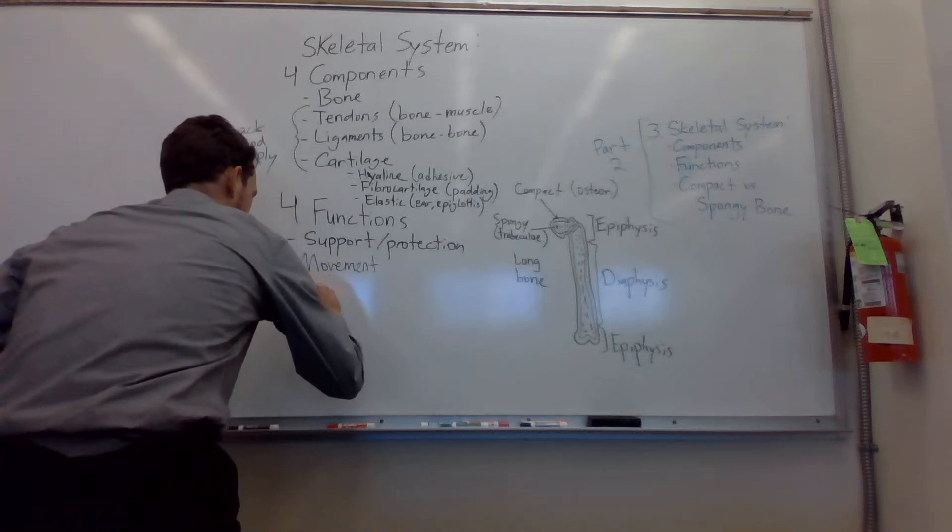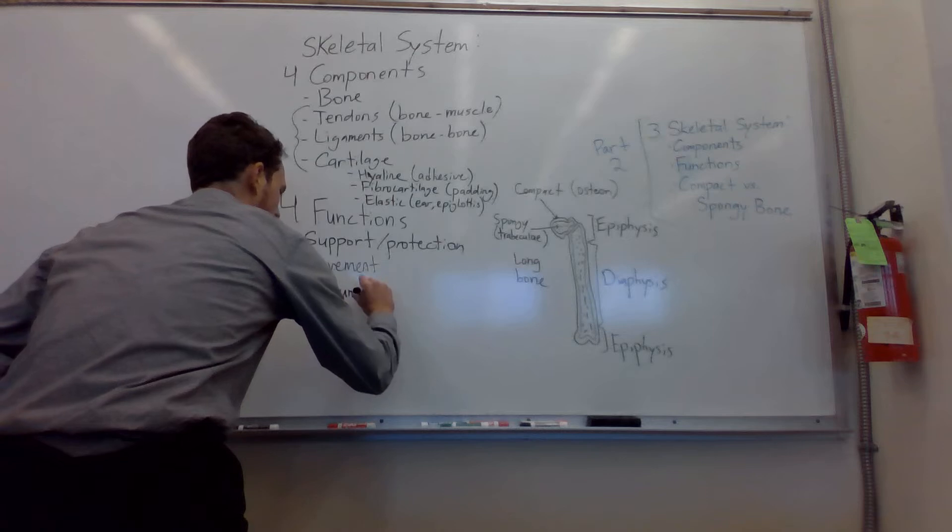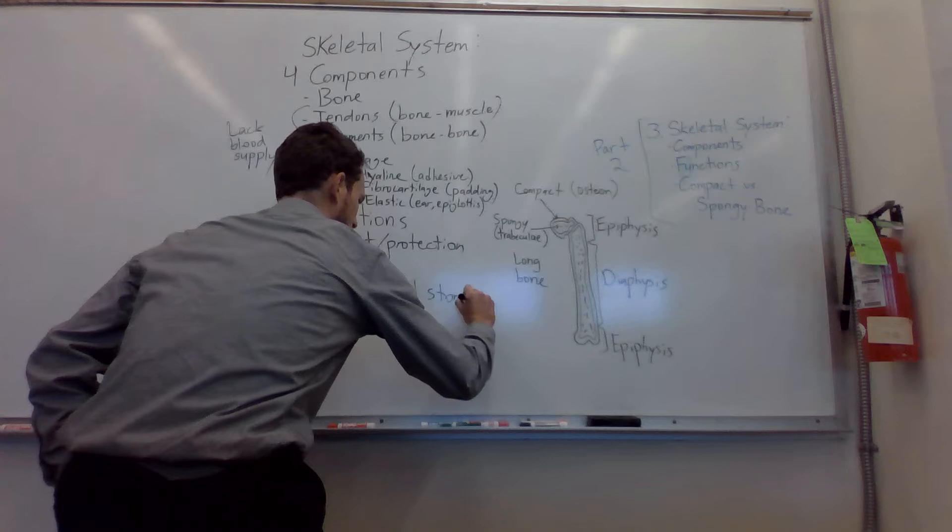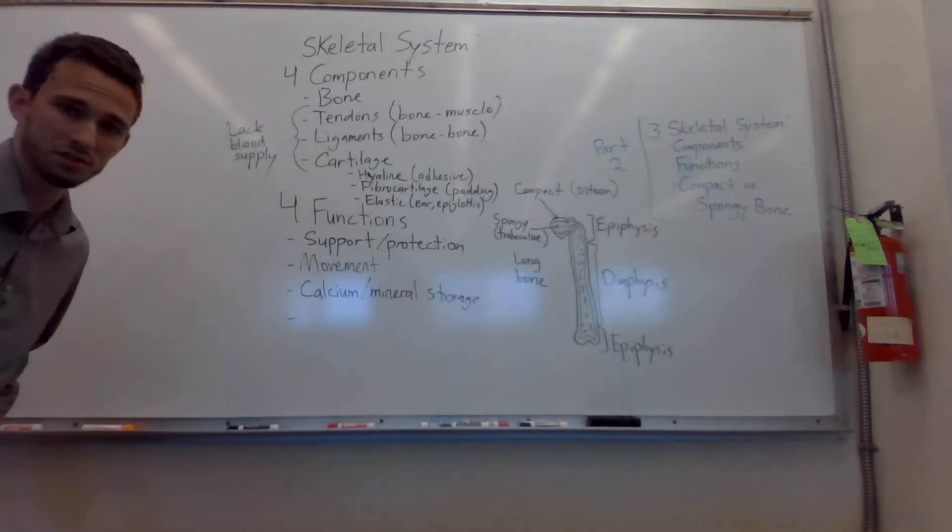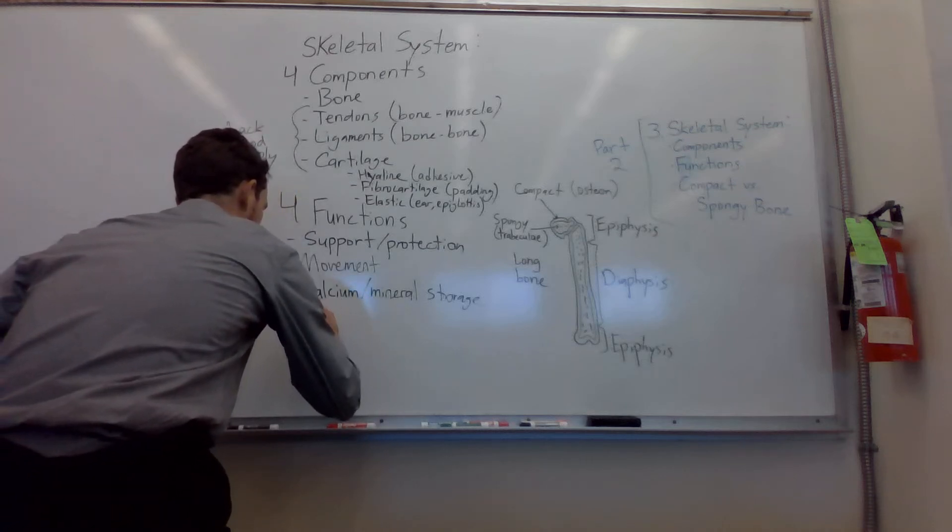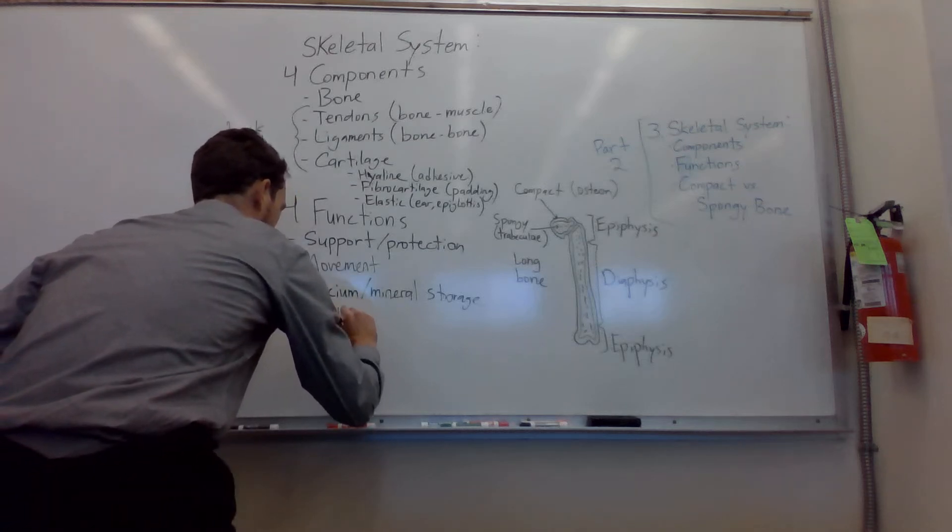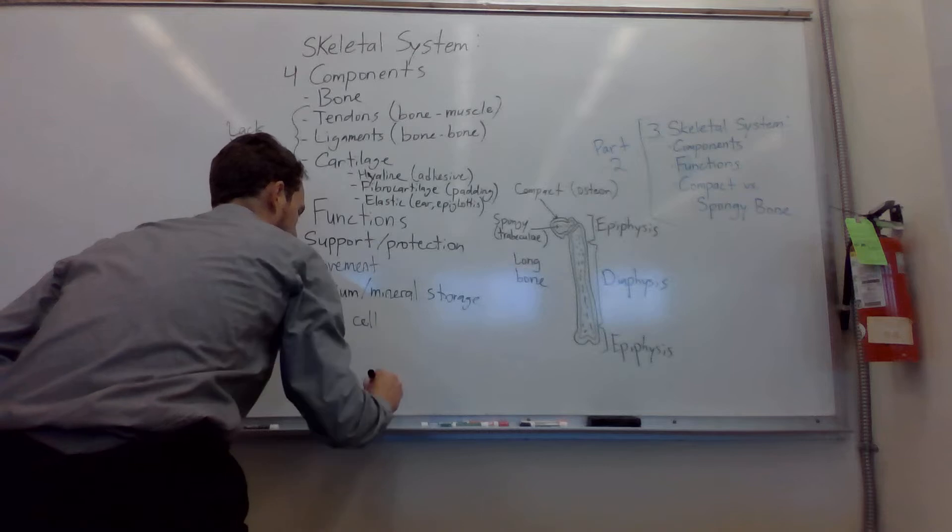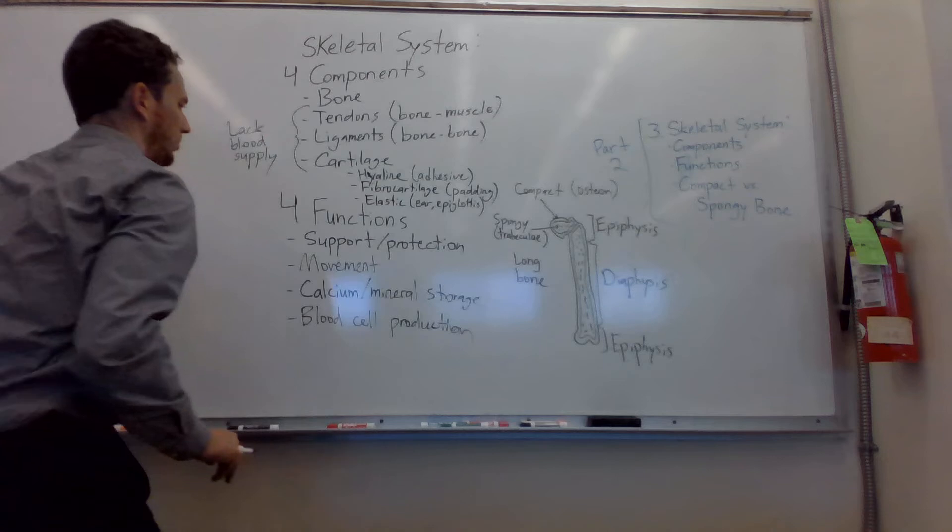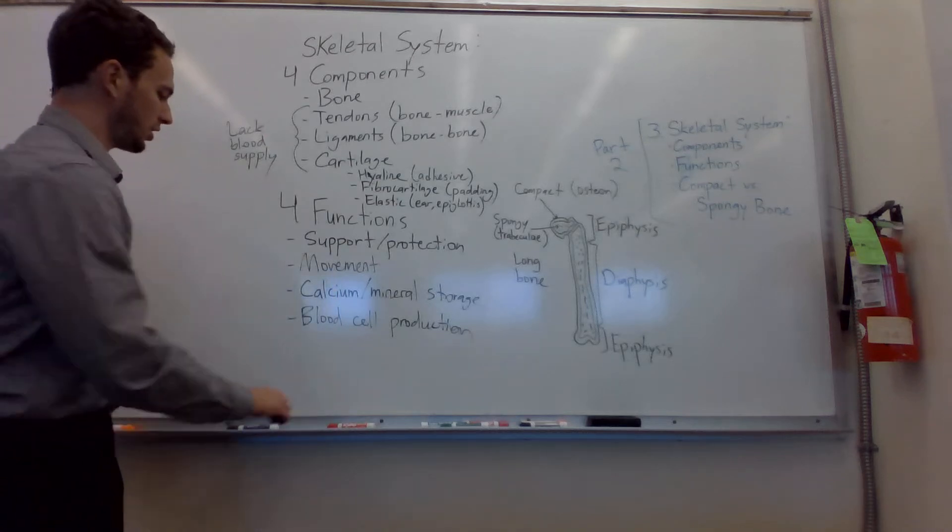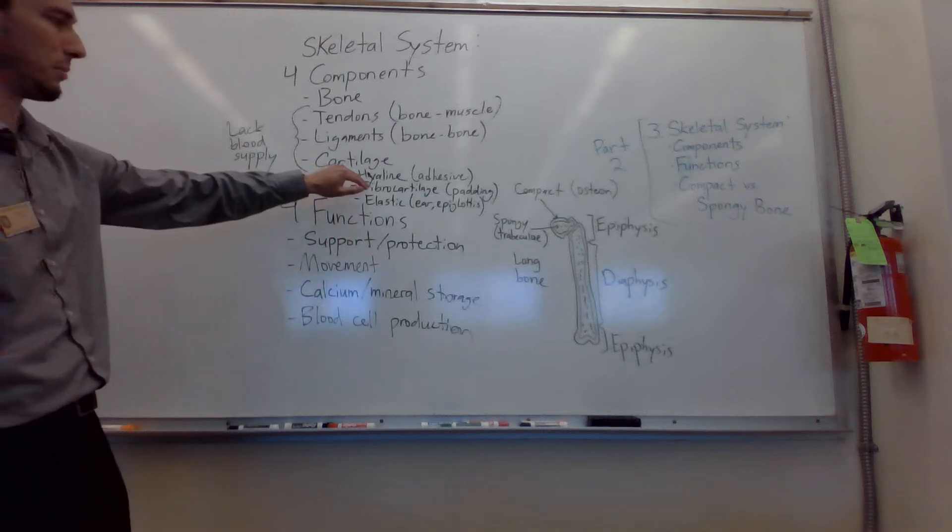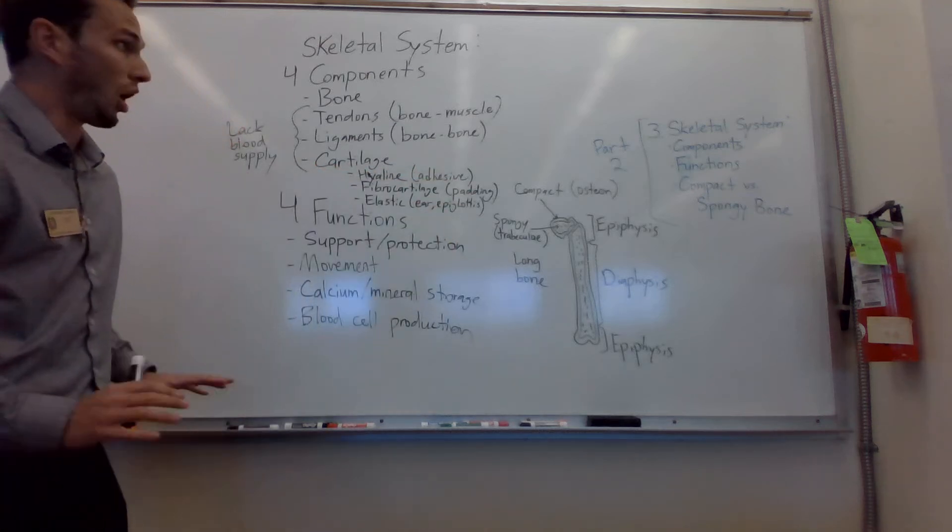So support, protection, and movement. There is calcium storage. So calcium slash mineral storage. 99% of your calcium in your body are stored in your bones. And that's important with homeostasis. We'll talk about that at a later date. And then lastly, blood cell production. So in your bone marrow, you're producing blood cells, both white and red. So those are the four main functions of the skeletal system. And you can also argue padding perhaps or kind of more support because those fibrocartilage is going to give the padding and the structure.